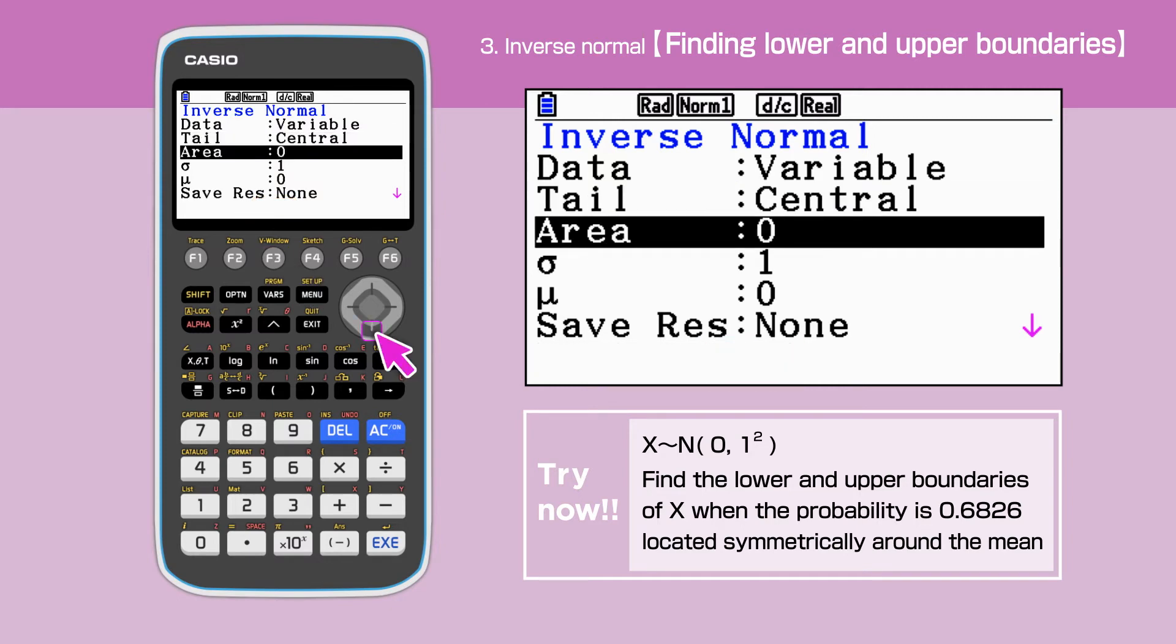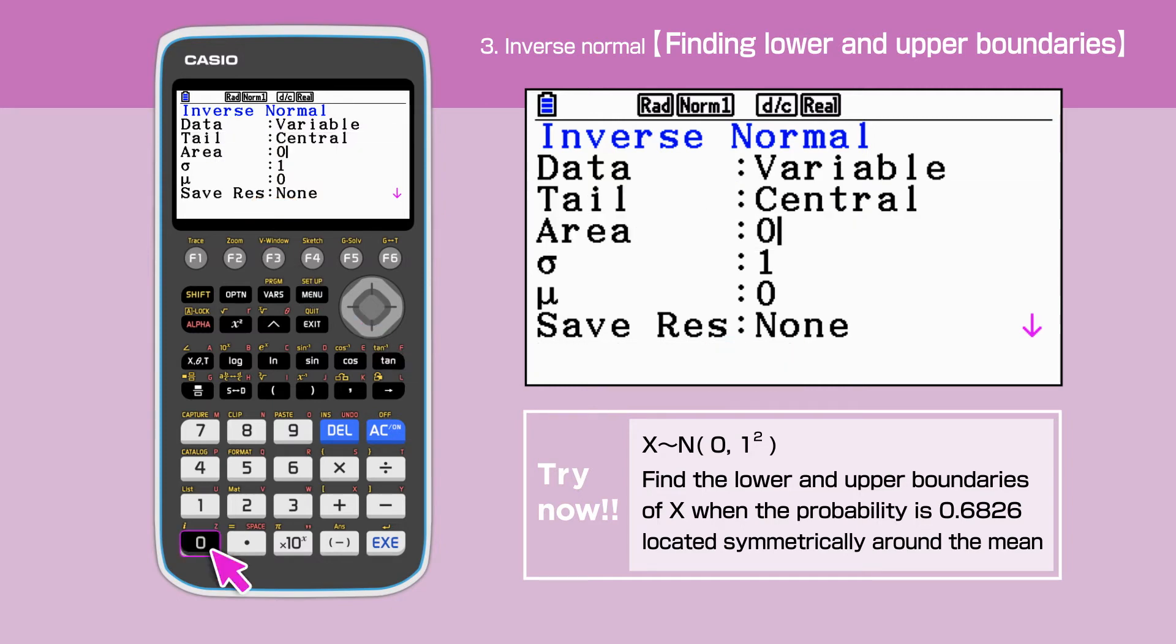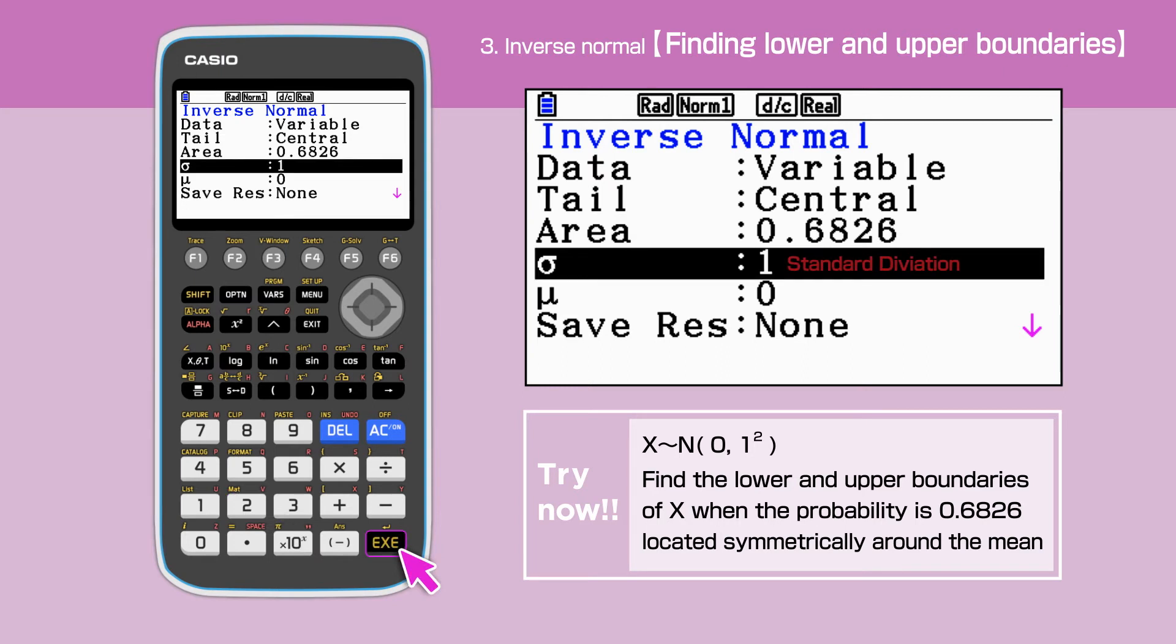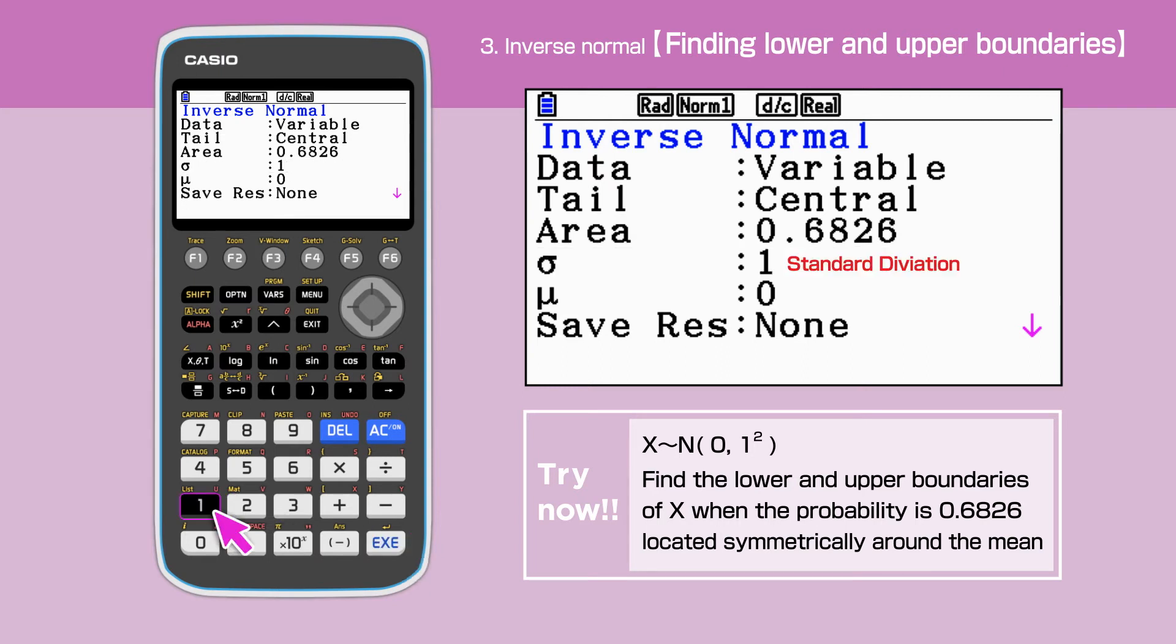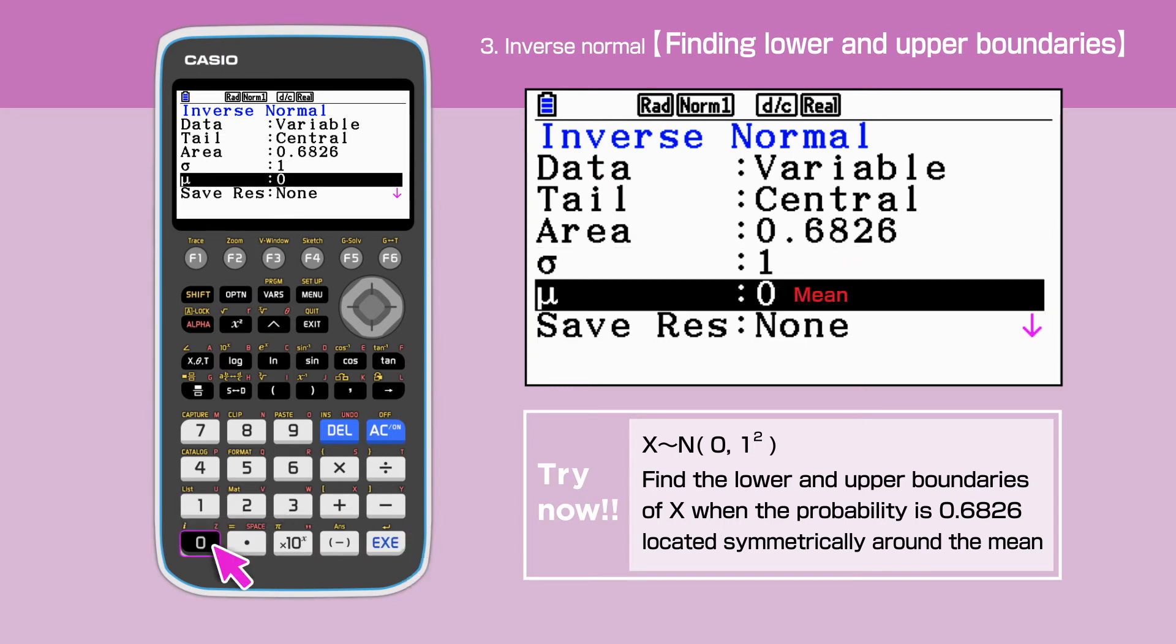The area is a probability, so enter 0.6826. Sigma is 1 and mu is 0.